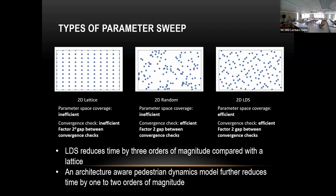Based on this, we got about three orders of magnitude reduction in number of points used — meaning also reduction in computation time. We also changed the model to be architecture-aware, because unlike models of molecules where behavior is precisely defined, humans are inherently variable. So we designed a model that works well on GPUs.